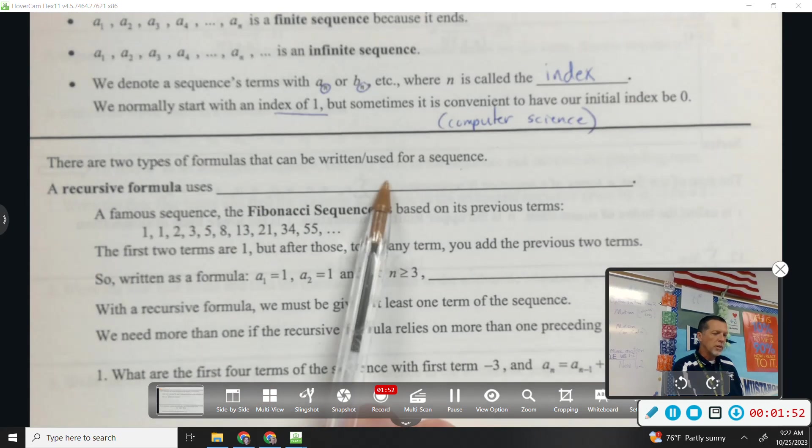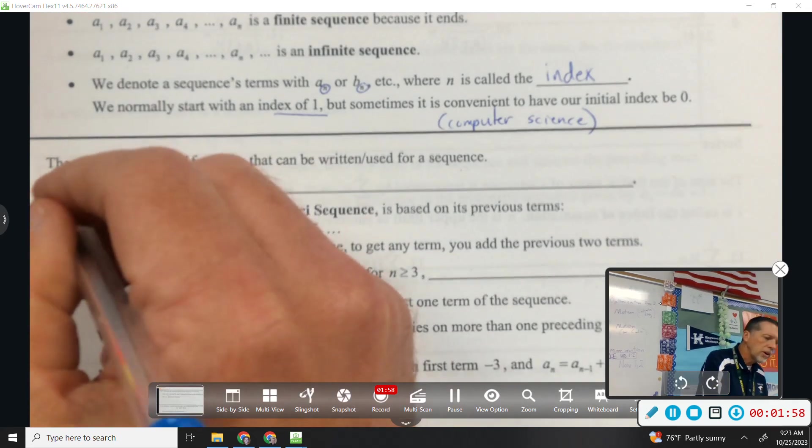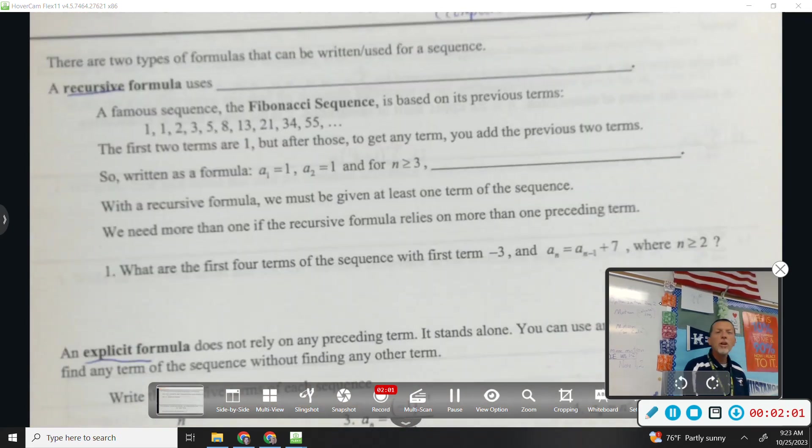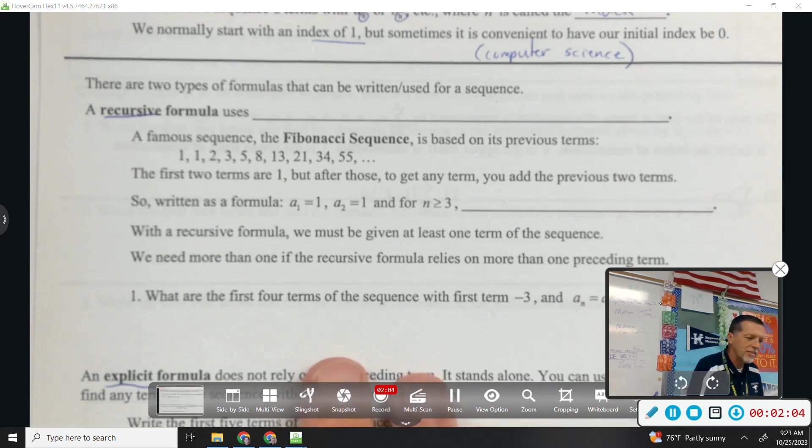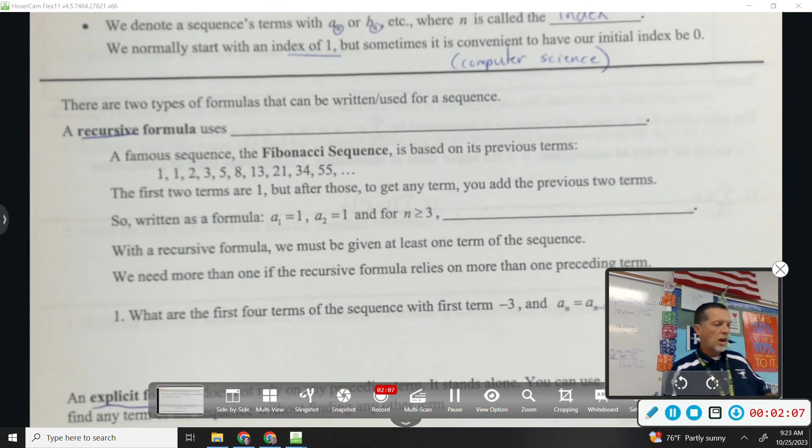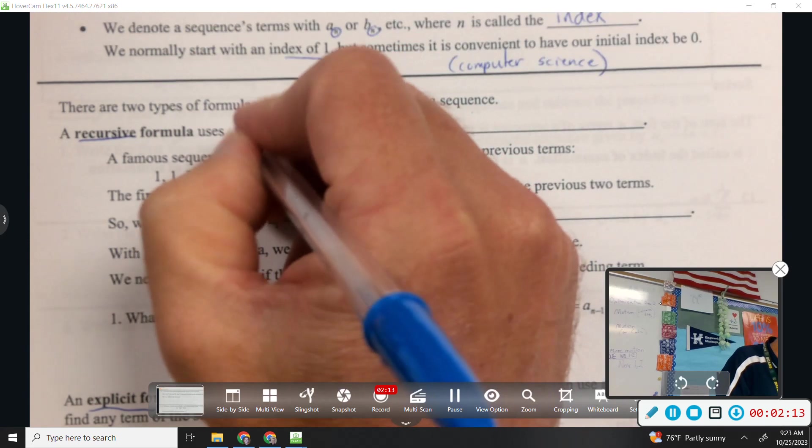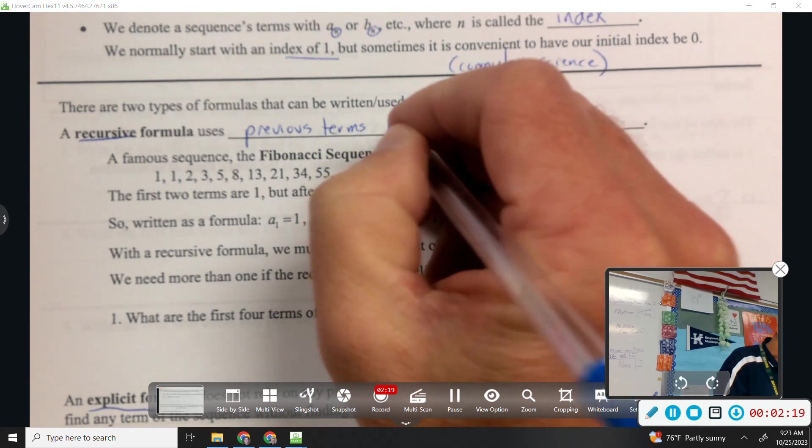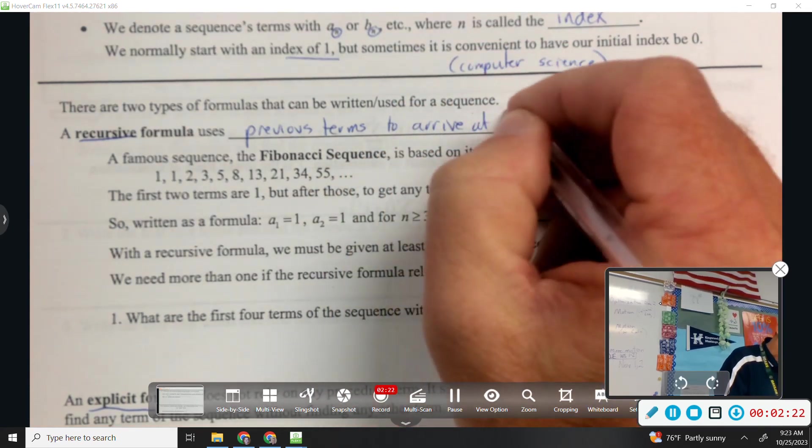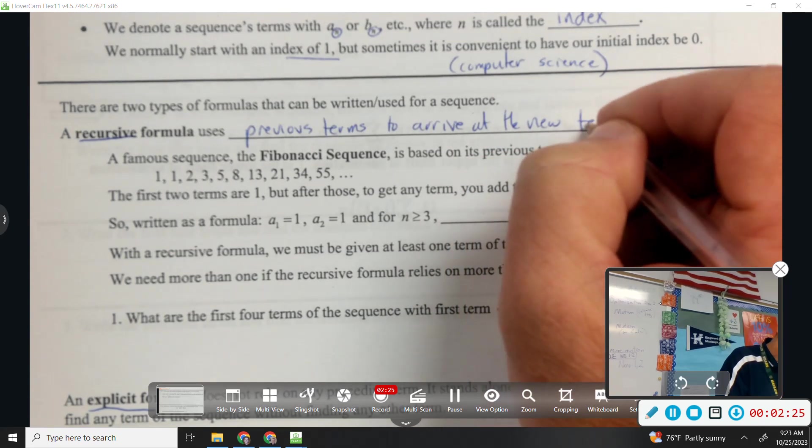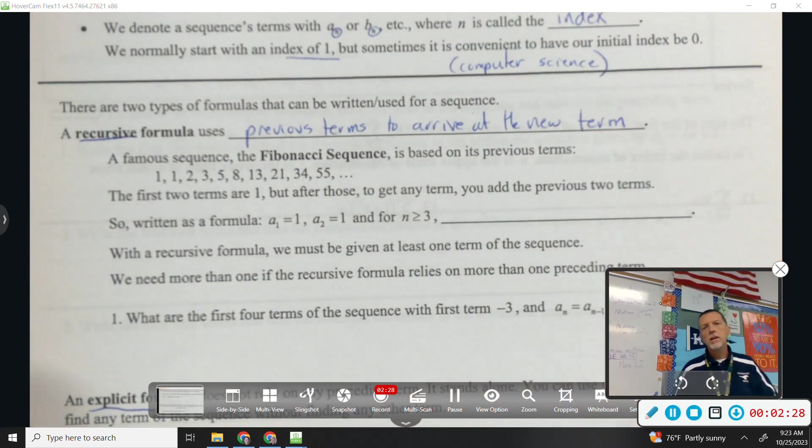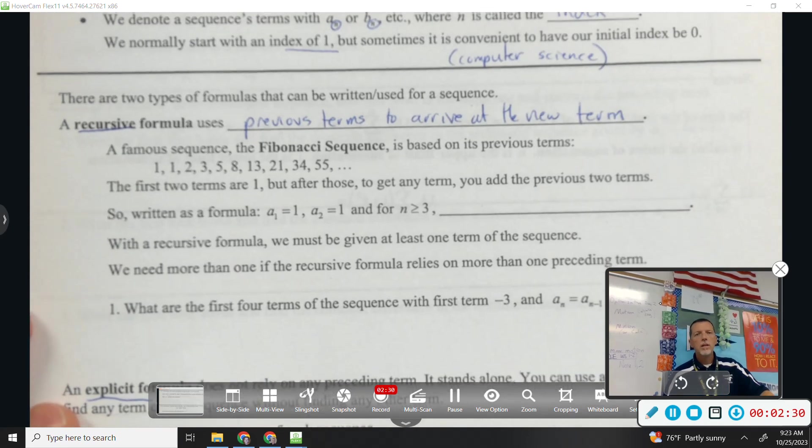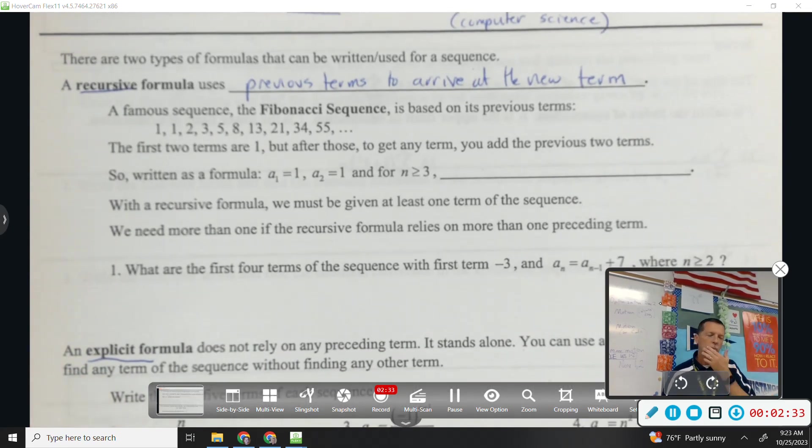There are two types of formulas that can be written or used for a sequence. Recursive versus explicit. There are other ways to classify them. Recursive means like looking back. So a recursive formula uses previous terms to arrive at the new term.